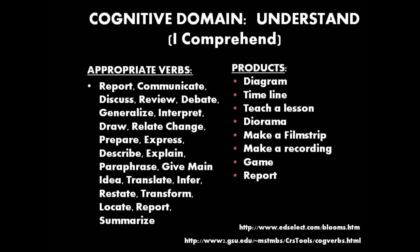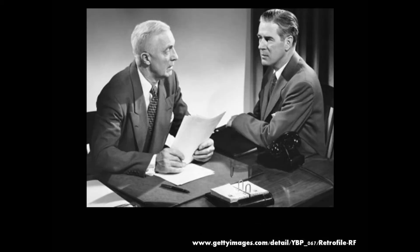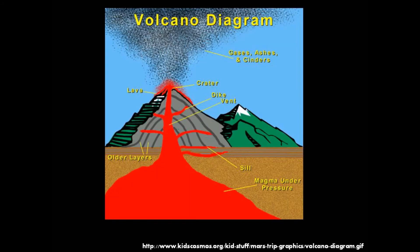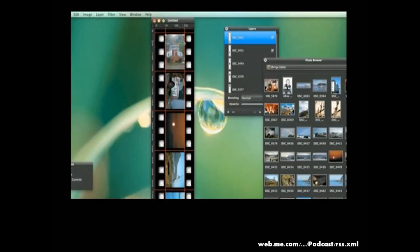The second subgroup, understand, or 'I comprehend,' shows the level of understanding and is concerned with the ability to know what is being communicated in order to make use of the information. Some appropriate verbs are report, communicate, or interpret. Your students could display how they understand by drawing a diagram, a timeline, or making a film strip.